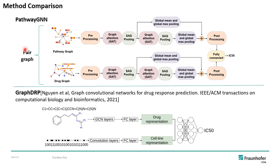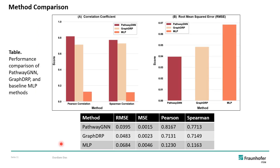Lastly, we compared our method PathwayGNN with a recently published method GraphDRP. The architectures are similar, although GraphDRP used only mutation and CNV data, whereas we used gene expression in addition to CNV and mutation. We also encoded the CNV and mutation data in a different manner, and both predict IC50. The results clearly indicate that PathwayGNN outperforms GraphDRP and a baseline multilayer perceptron method in both Pearson and Spearman correlation and also in terms of errors. PathwayGNN has the lowest error.